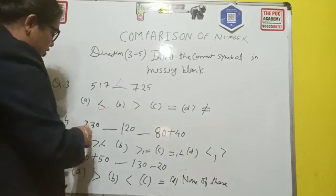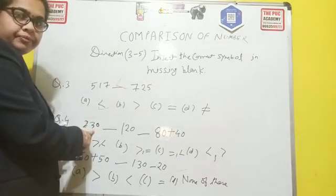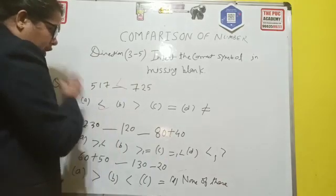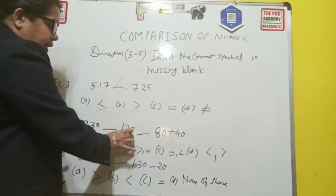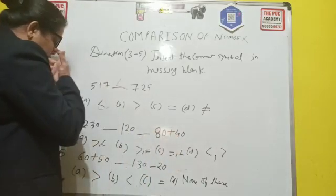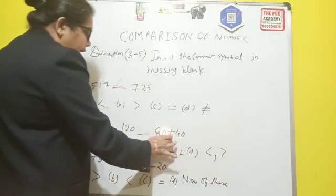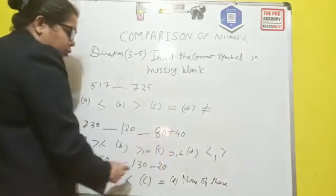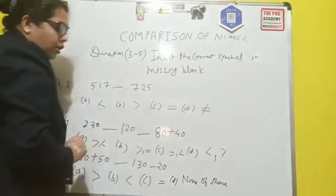And the next question is 230 in between there is a space to put a symbol, 120 and another symbol 80 plus 40. So first you do 80 plus 40. How much children? 8 plus 4, 12. So this is your 120.